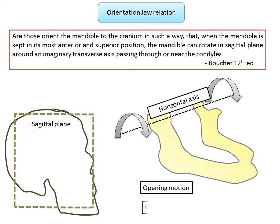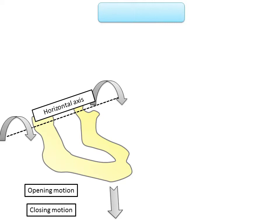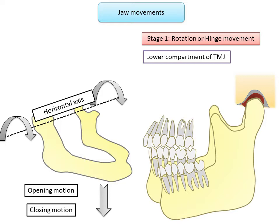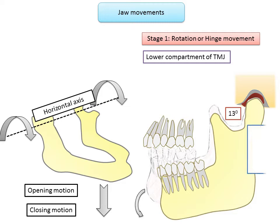The temporomandibular articulation is a complex joint in which two basic movements of the mandible can be distinguished. The first is rotary or hinge-like movement, which takes place between the articular disc and condyle in the lower compartment of the TMJ. This occurs when the jaw opens slightly to an angle of about 13 degrees — the condyles simply rotate in their position with no translation, at an inter-incisal distance of about 20 to 25 millimeters.